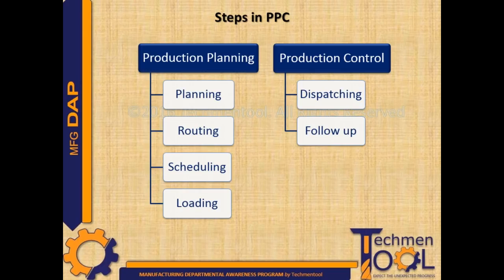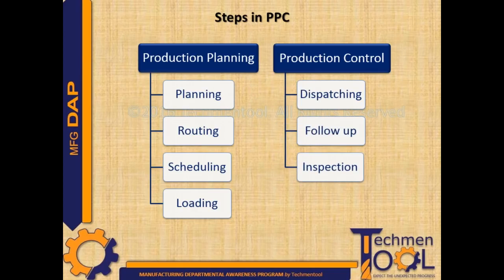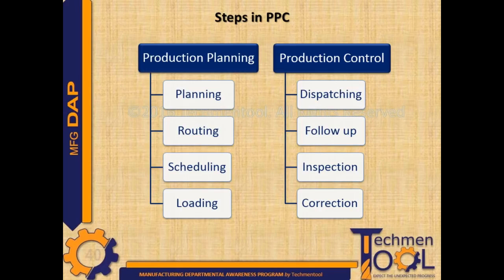Follow-up or reporting is the process of determining the progress of work, removing bottlenecks in the flow of work, and ensuring that productive operations are taking place in accordance with the plans. Inspection is the process of maintaining quality in production and evaluating the efficiency of processes, methods, and manpower so that improvements can be made. Correction is the process of making adjustments in processes or activities by eliminating deviations to achieve quality output.